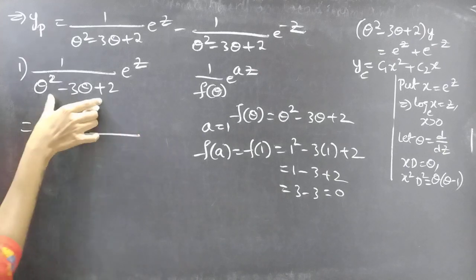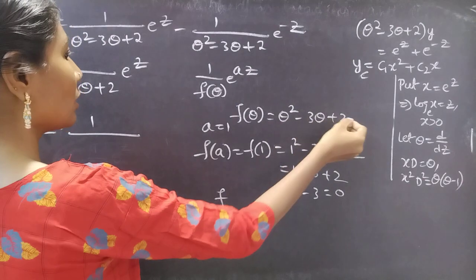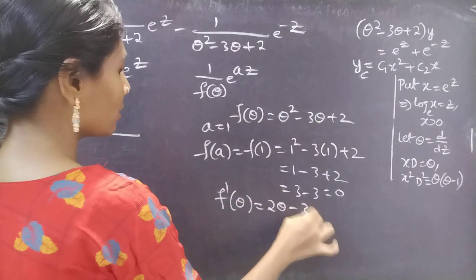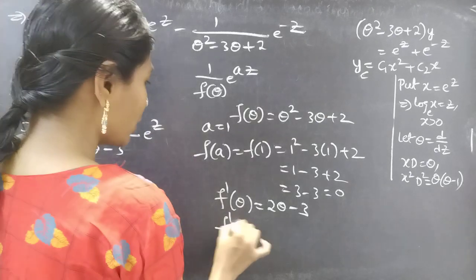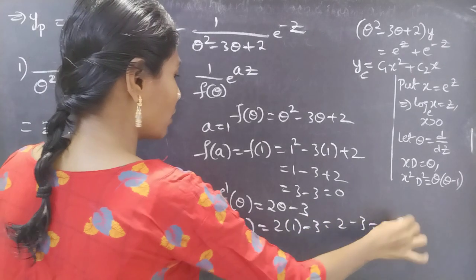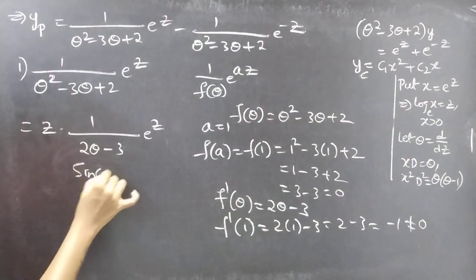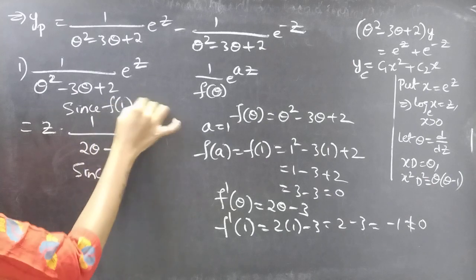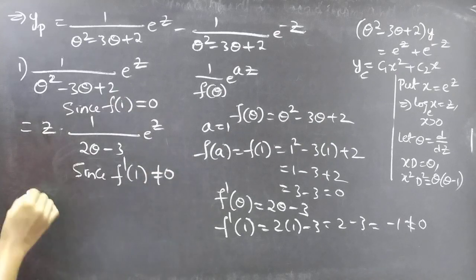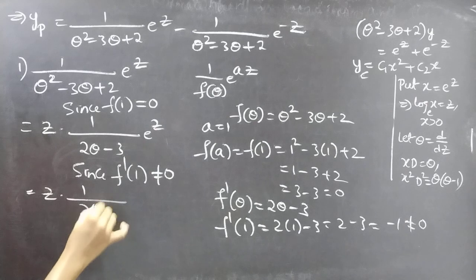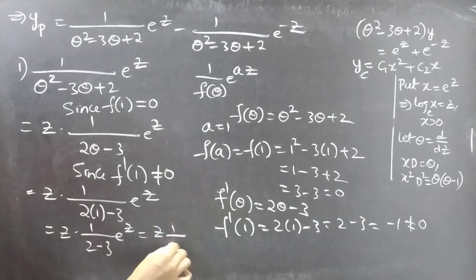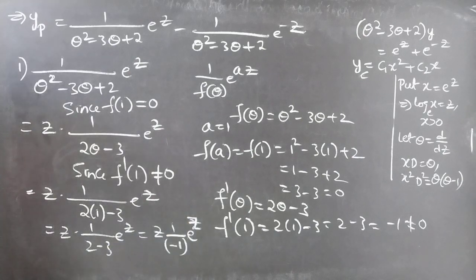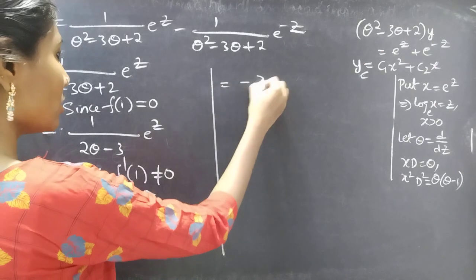Since f(1) equals 0, we multiply by z and replace f(theta) with f'(theta) in the denominator. If f(theta) equals theta squared minus 3 theta plus 2, then f'(theta) equals 2 theta minus 3. Checking f'(1): 2 times 1 minus 3 equals minus 1, which is non-zero. So we replace theta by 1 in f'(theta), giving z times 1 by (2 minus 3) times e to the power z, which equals z times (1 by minus 1) times e to the power z, giving minus z e to the power z.